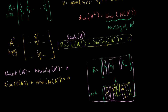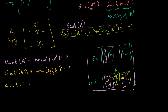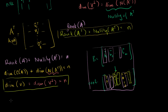The column space of A is spanned by our basis vectors for V, so its dimension is just the dimension of V. And the null space of A transpose is the orthogonal complement of V. So we get: dimension of V plus dimension of the orthogonal complement of V equals n. That's the result we wanted — if V is a subspace of Rn, then dim(V) + dim(V⊥) = n.